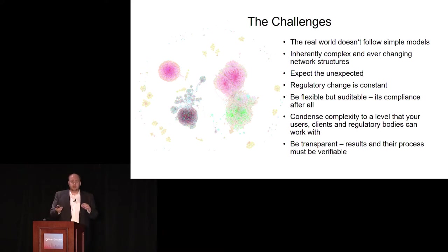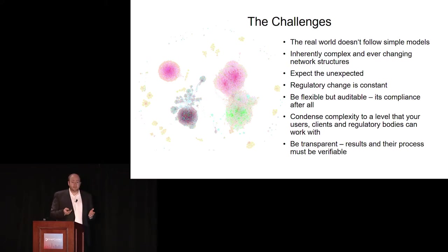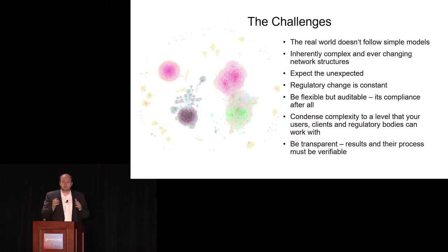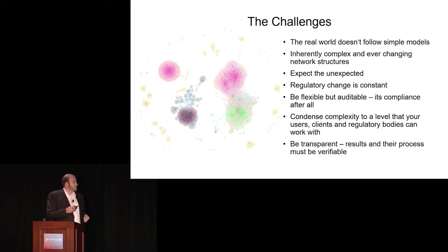We need flexibility within the data model and the ability to change the data model at any time. We also need to be auditable — because it's compliance, I can't just change everything, I need to document it and make it comprehensible to a third party. We have high complexity in our backend networks, but we need to condense it down to a level where users, clients, or regulatory bodies can actually work with it. And our results and processes must be transparent and verifiable.